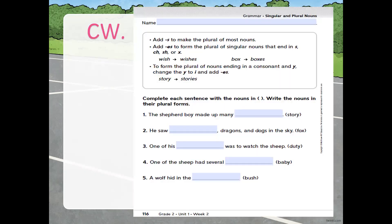Now let's do the book. Please turn to page 116. We have the rules here on the top inside the box. Complete each sentence with the noun in plural form. The first one is 'story' — the shepherd boy made up many stories. Look at the ending letter: we have a Y with a consonant in front of it, so we replace Y with I-E-S — stories.